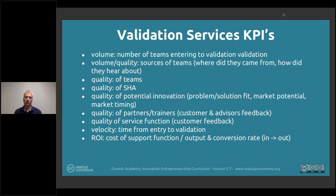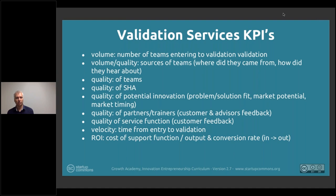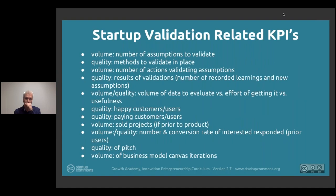Validation service KPIs include quality of potential innovation, quality of partners and trainers, volume and quality of teams entering, and sources of teams — where did they come from, how did they hear about the service? Having these KPIs in place will start to drive the thinking of how to provide services more effectively.